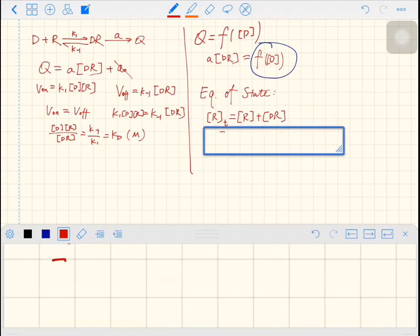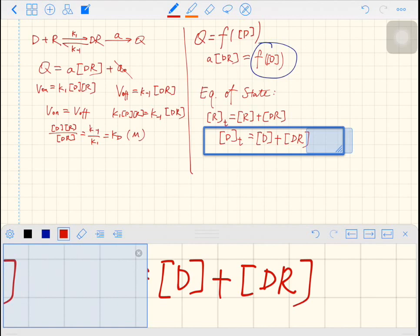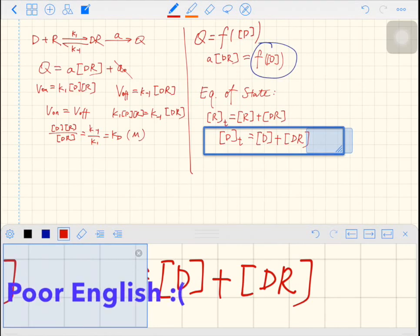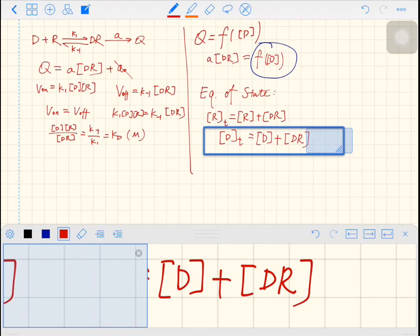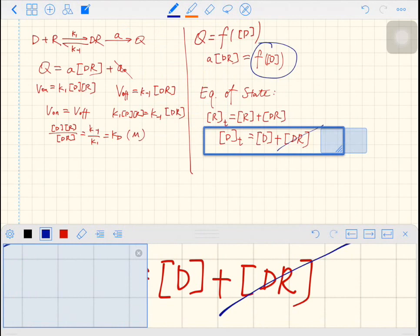Similarly, we also have a total number of drug. The drug can be in the free form or can be in the binded form. However, we assume that the binding form of drug is much smaller than the total concentration. And we cross this out. And then we have DT equals D.